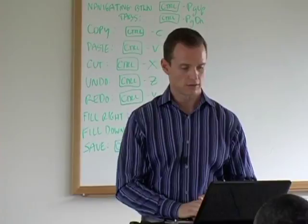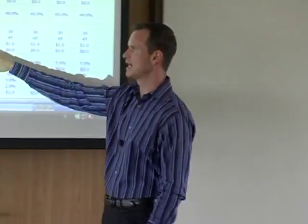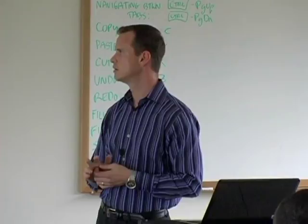The last item in my current assets section is other current assets. We're just going to link back to our assumptions tab — H24 on the assumptions tab. We're holding other current assets flat at $1 million. Fill that to the right. Now we can sum up our total current assets in each year.